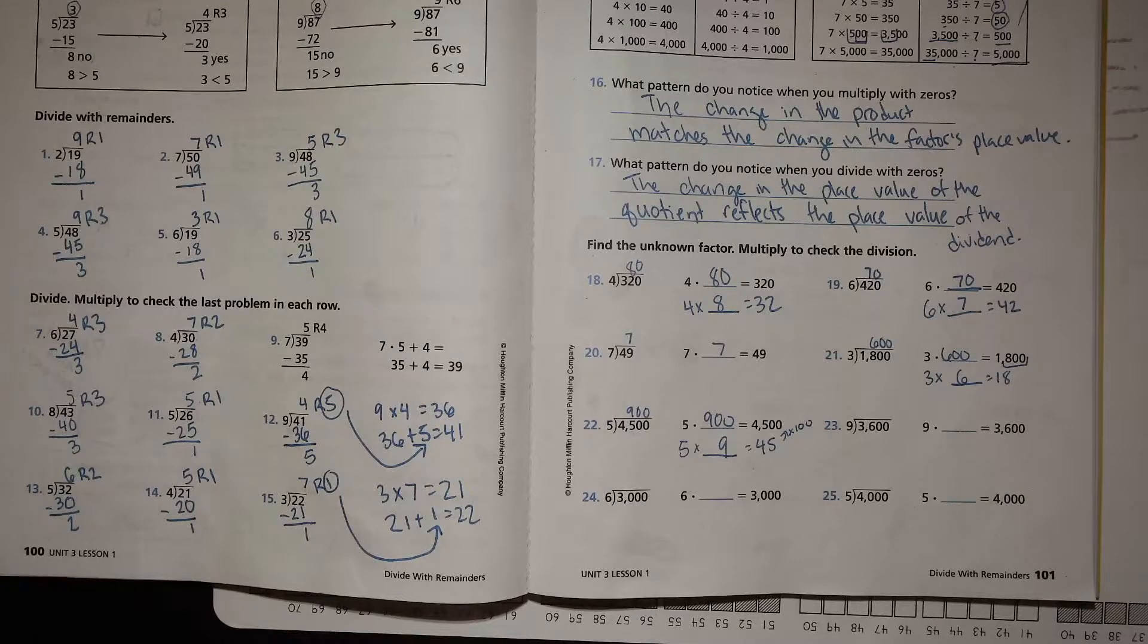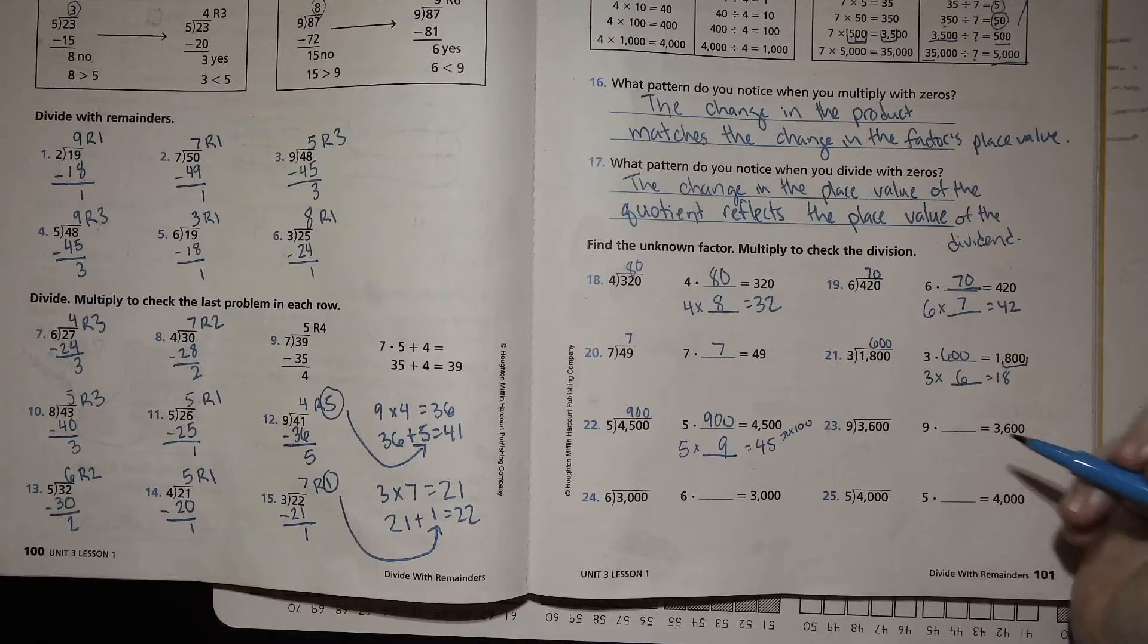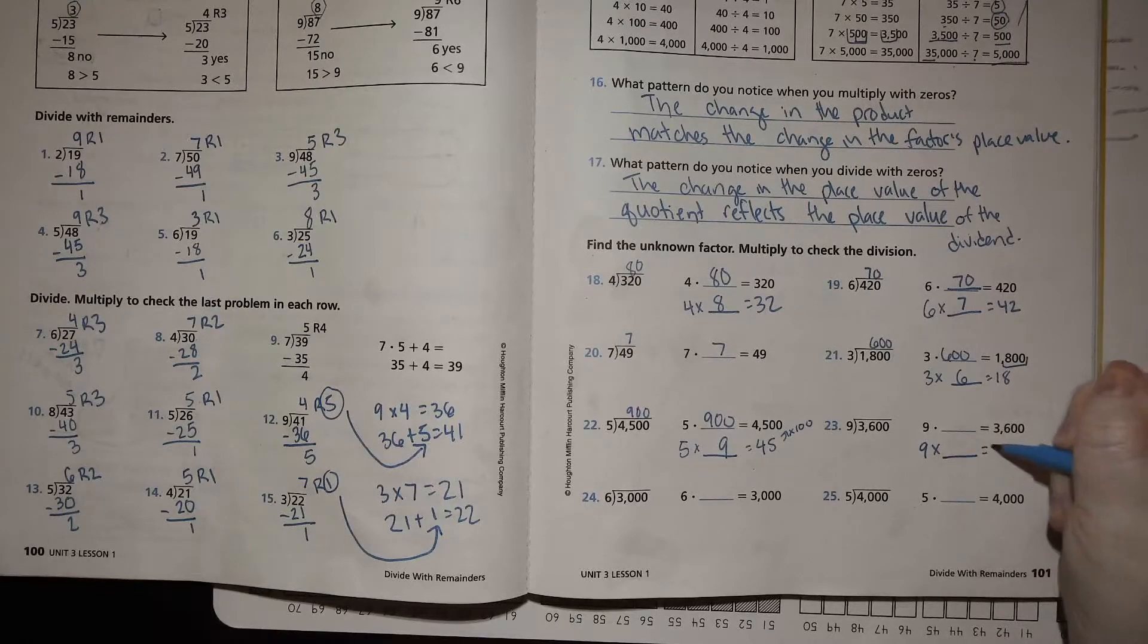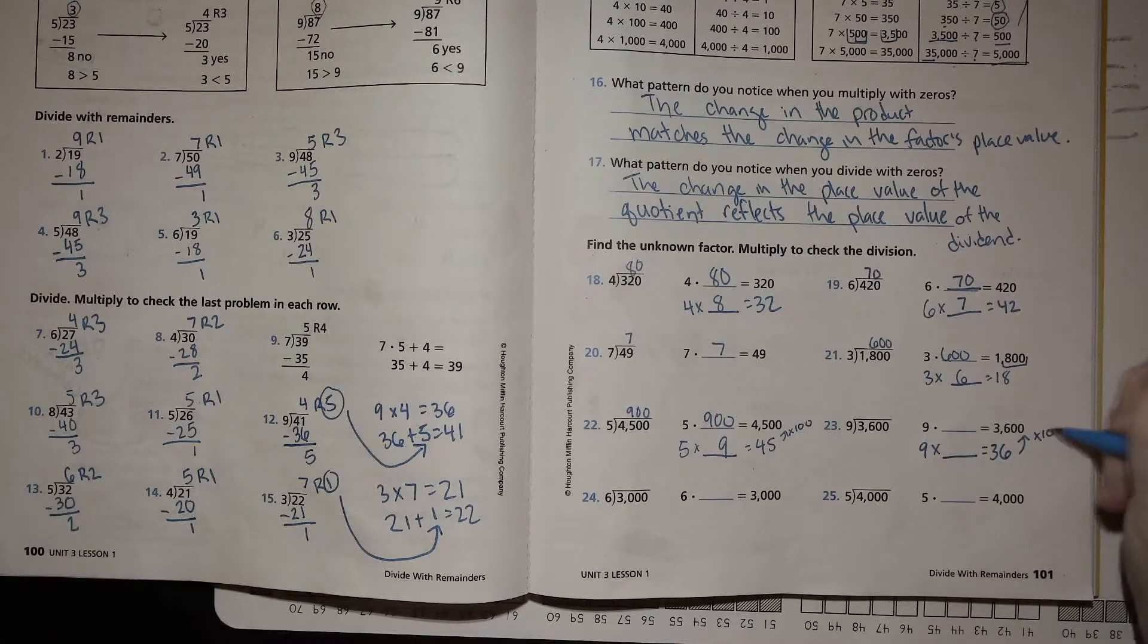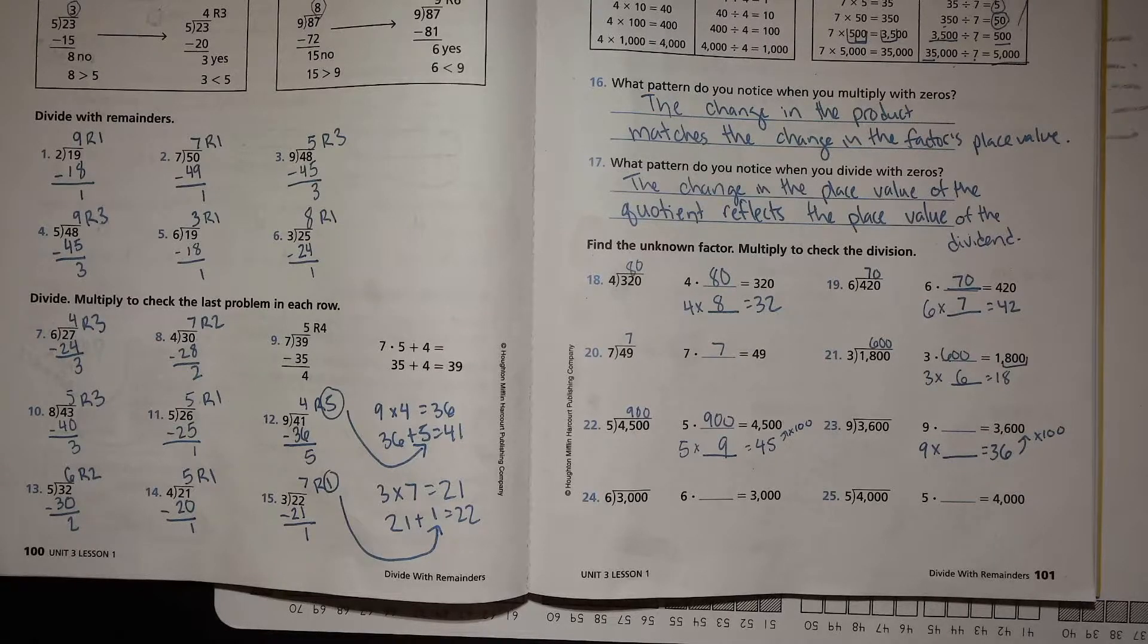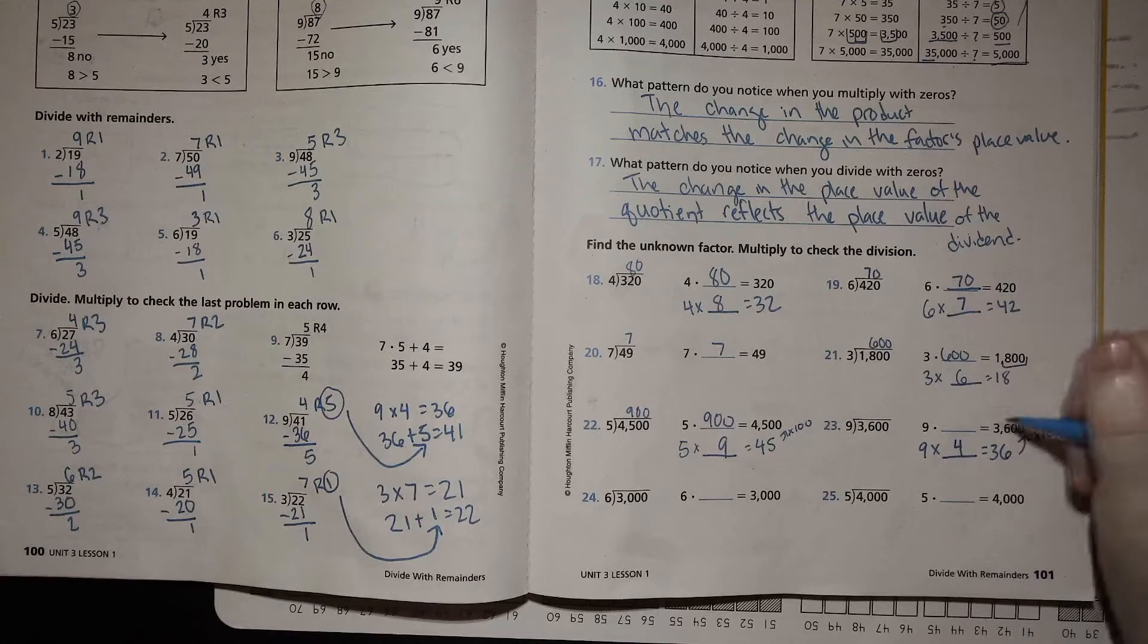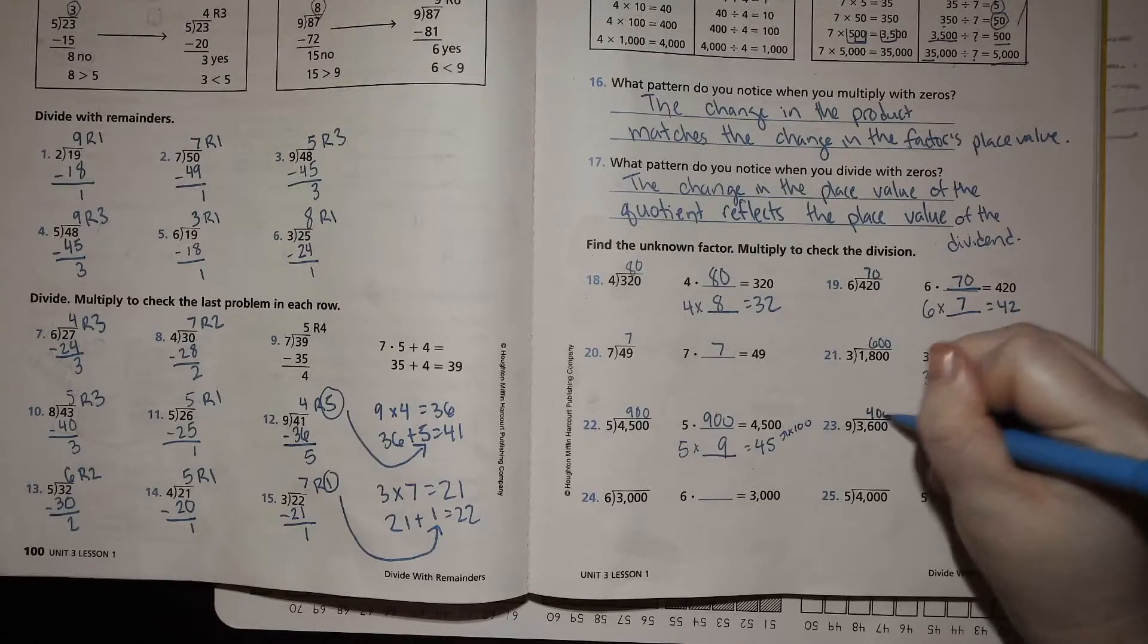Here we go. 3,600 divided by 9. 9 times what is 36? And then to get to 3,600, we'll times that by 100. So 9 times what is 36? 4. So times that by 100 to get 3,600. And we have 400.